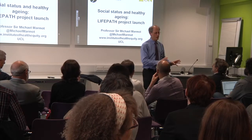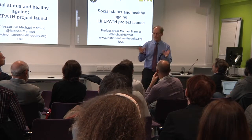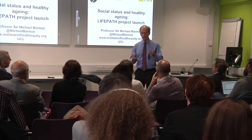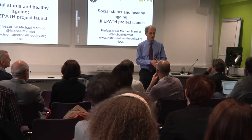Understanding the biological pathways is an important part of building up the causal picture. For example, we know education predicts mortality — the higher the education, the lower the mortality. We know that income predicts. We know that measures of material deprivation predict. We're trying to put together a pathway of how they predict, but how are they causal? What goes on?